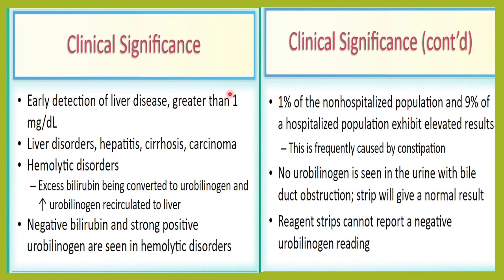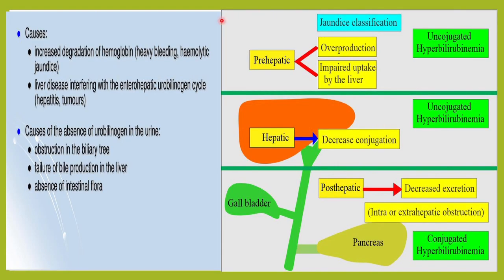Urobilinogen helps detect liver diseases like hepatitis, cirrhosis, and hemolytic disease. Elevated urobilinogen is found in 1% of non-hospitalized and 9% of hospitalized patients, frequently caused by constipation. Increased urobilinogen is caused by heavy bleeding, hemolytic anemia, viral hepatitis, or liver tumors. Decreased urobilinogen occurs due to biliary tree obstruction or absence of intestinal flora.